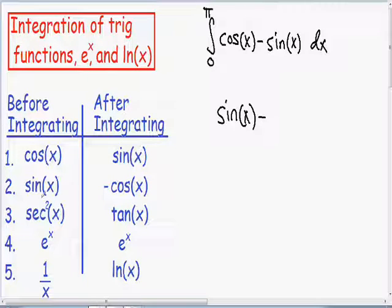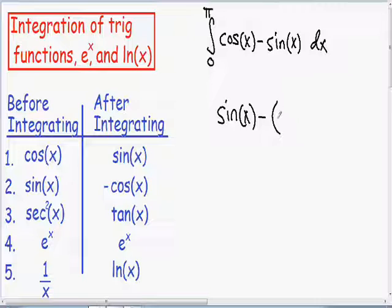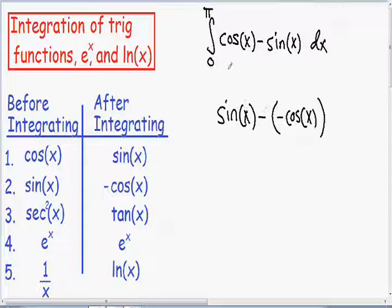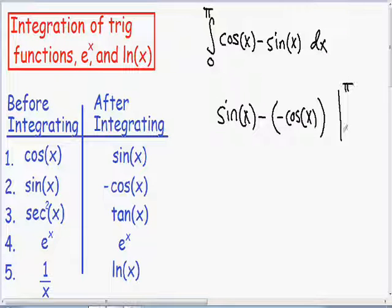We'll look at line number two of our table. If we have the integral of the sine of x, after you integrate it, it's going to become the negative cosine of x. So I'm going to integrate the sine of x and put the negative cosine of x. This is a definite integral, so instead of putting a plus C like we would for an indefinite integral, I'm going to make a line and put my upper limit at the top and my lower limit at the bottom.